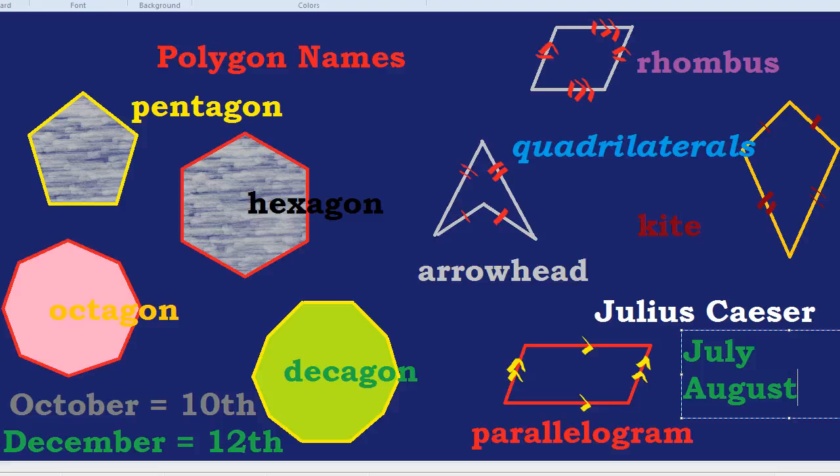And because of that insertion of two months, all the months thereafter were two more than what they should be. So while December is incorrectly now the twelfth month, a decagon is indeed ten sides. And shapes are all named correctly.